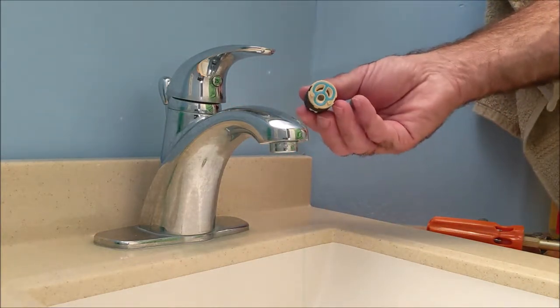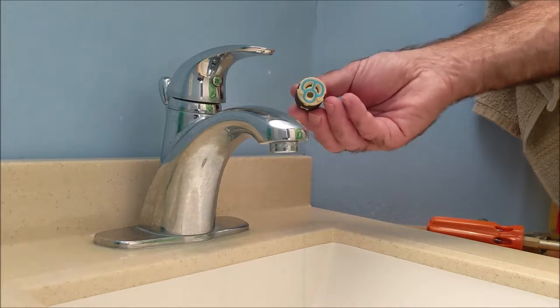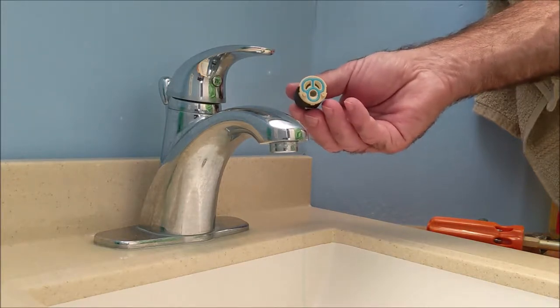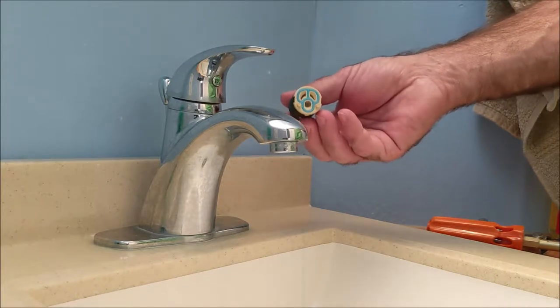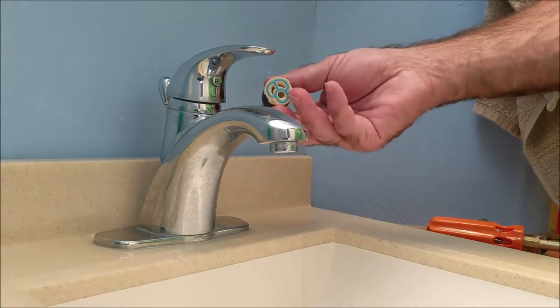Before I start replacing this cartridge in the faucet, first thing I'm going to do is turn the water off underneath the sink. So make sure you remember to do that, turn the water off underneath the sink and let the water drain out.